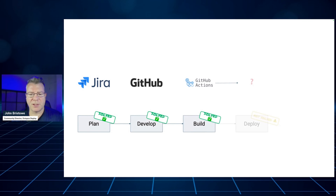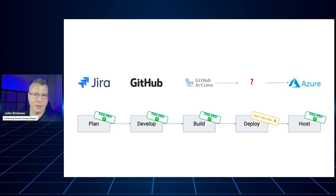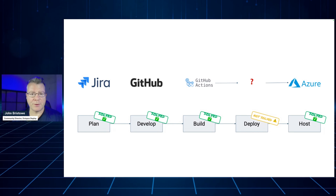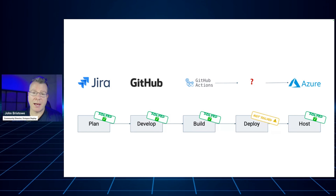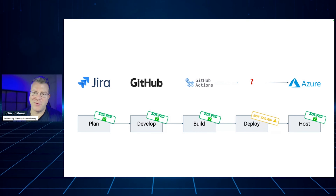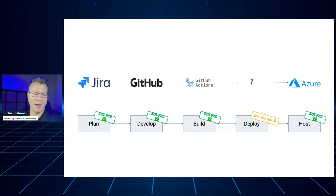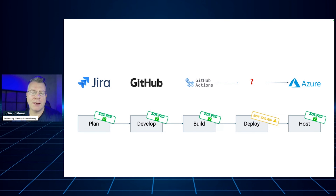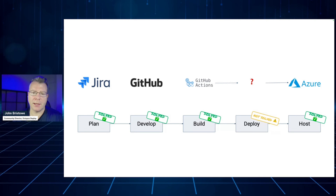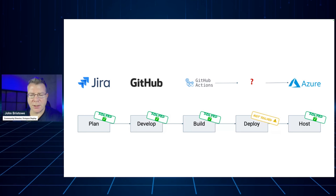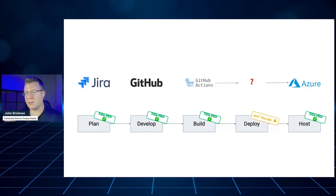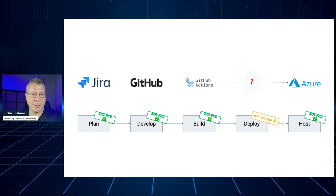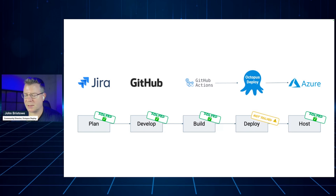Octopus Deploy can also be thought of as part of a best-of-breed pipeline. We know that software doesn't live in isolation, so we think a lot about how Octopus works well with others. Looking from left to right, you might have Jira for issue management, GitHub for source control, GitHub Actions as part of your CI process, production hosted on Azure. We feel that continuous integration is largely a solved problem — it's really CD, continuous delivery, that is not solved, and Octopus Deploy's mission is to be the enterprise platform solution for CD.